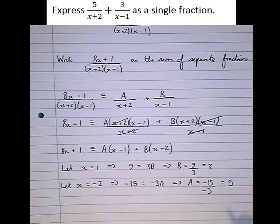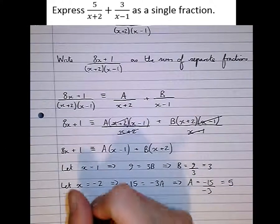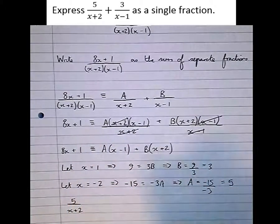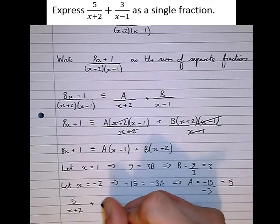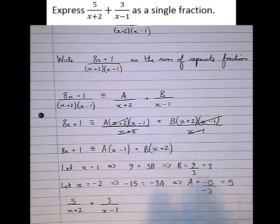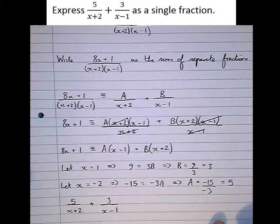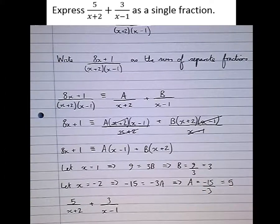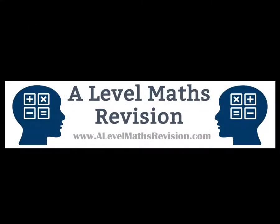So we can conclude that the answer, written as separate fractions, is 5 over (x + 2) plus 3 over (x − 1). Just to confirm this is correct, if we go back to the original question which we can see at the top of the screen, that is exactly what we started with. For more videos like this, go to alevelmathsrevision.com.